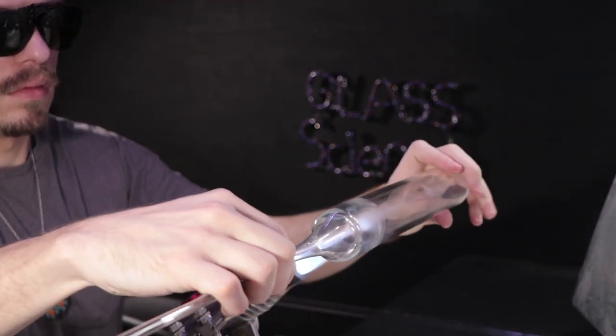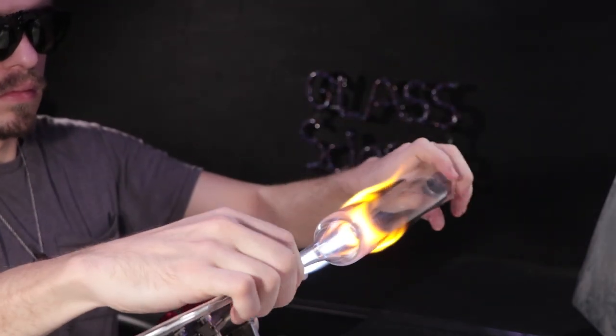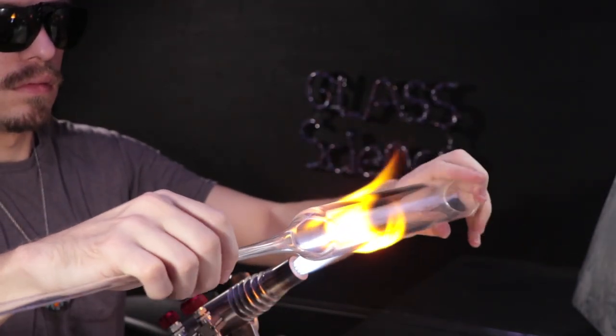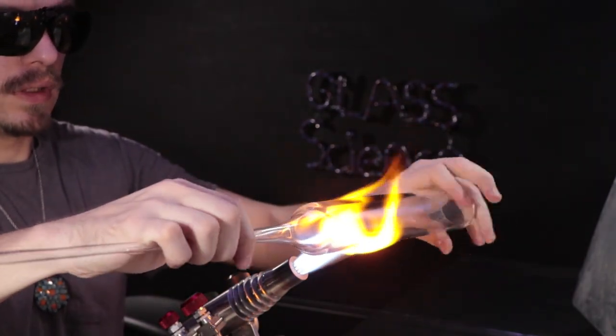You have a container full of liquid and then you put in weights of slightly different densities. And then as the temperature outside changes it will change the density of the liquid and those weights will rise and lower. It's pretty cool.